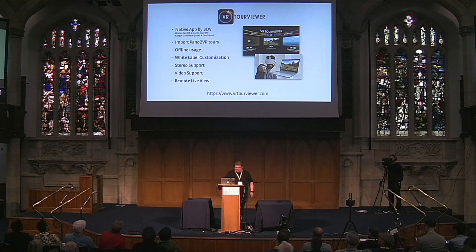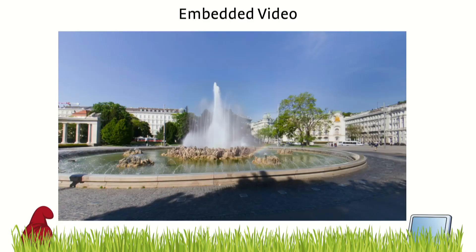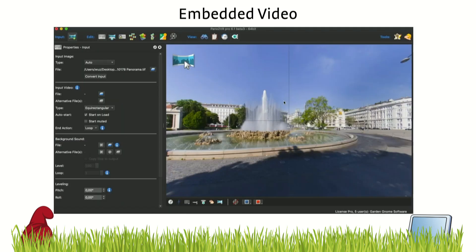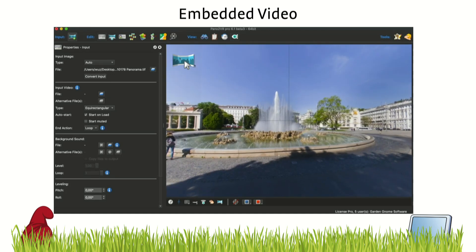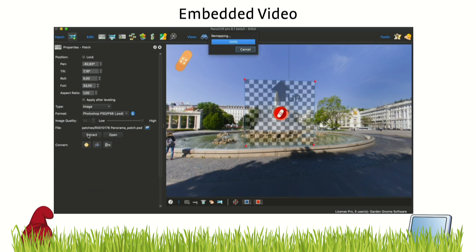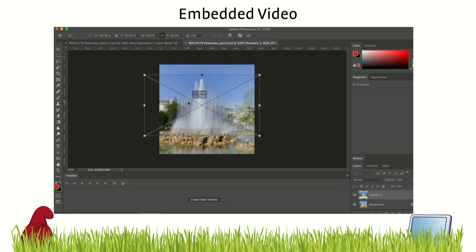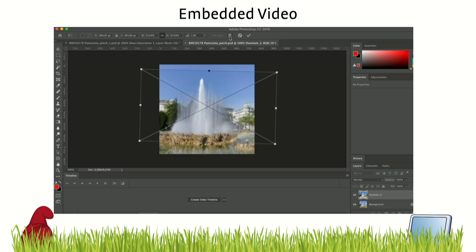Another area where we improved our software is embedded video. You know the trick — you have a moving part of a panorama. This worked for a long time, but now we improved the workflow. Now you just have to select a patch from the area where you want to have the moving part. This opens Photoshop automatically. Then you just bring in the video and position it where the video matches the image.